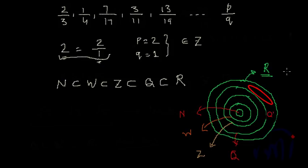So this is the relation between all the types of numbers. In the next video we are going to discuss the different types of rational numbers — how to identify a rational number and how to convert a decimal number into a rational number. There are two types and they are really very interesting. Keep watching MathSmart — bye-bye till then.